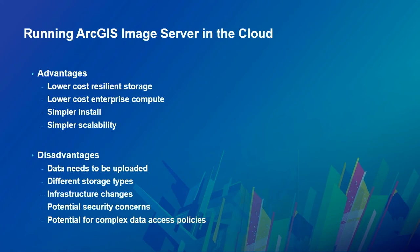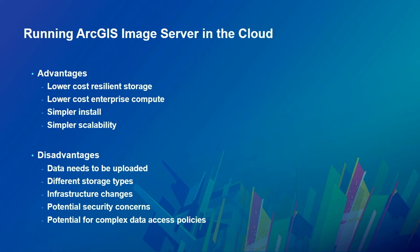Some of the advantages: you've got lower cost and more resilient storage, it's simpler setting up an enterprise computing environment, and the scalability is really one of the keys. You do have some disadvantages — you've got to get data into the cloud in the first place, there are many different storage configurations, and infrastructure changes all the time. I'm most familiar with Amazon, but everything I'm showing here is also applicable to Azure, Google Cloud, and Alibaba. The complex data access policies I won't have time to discuss, but slides are available.